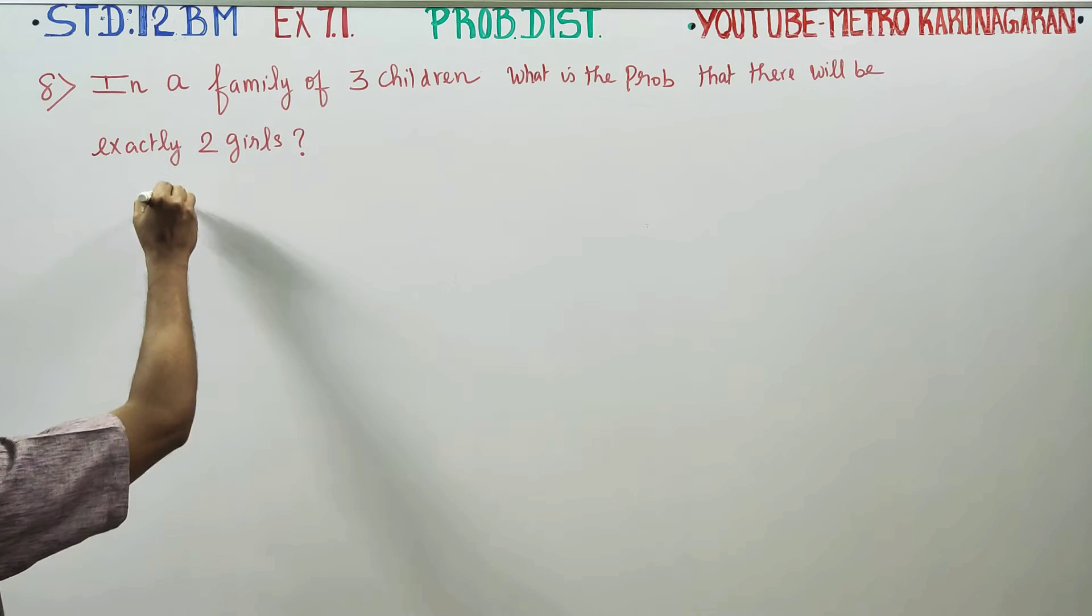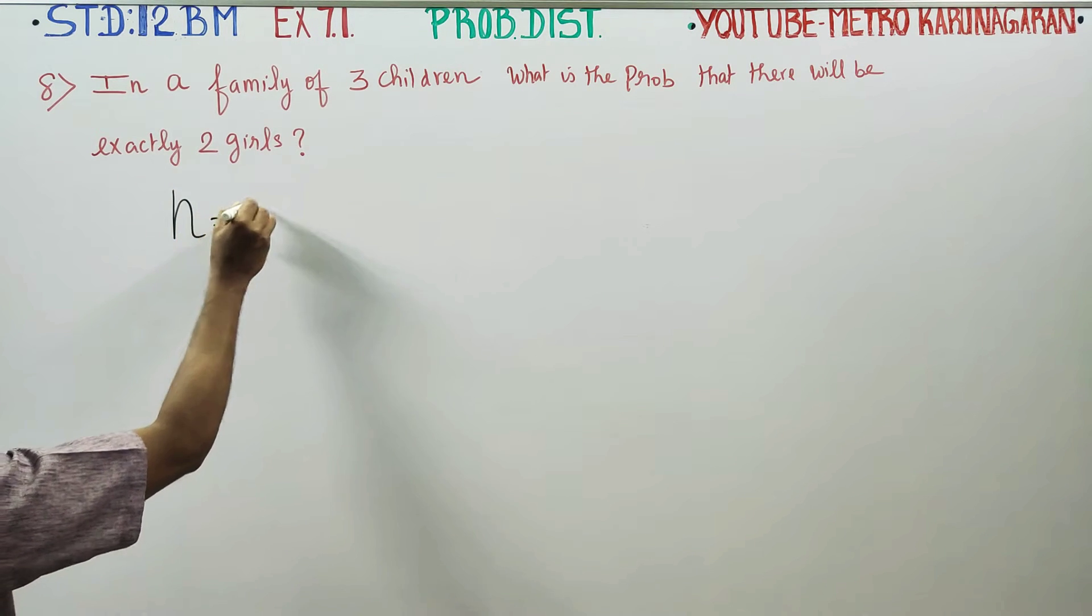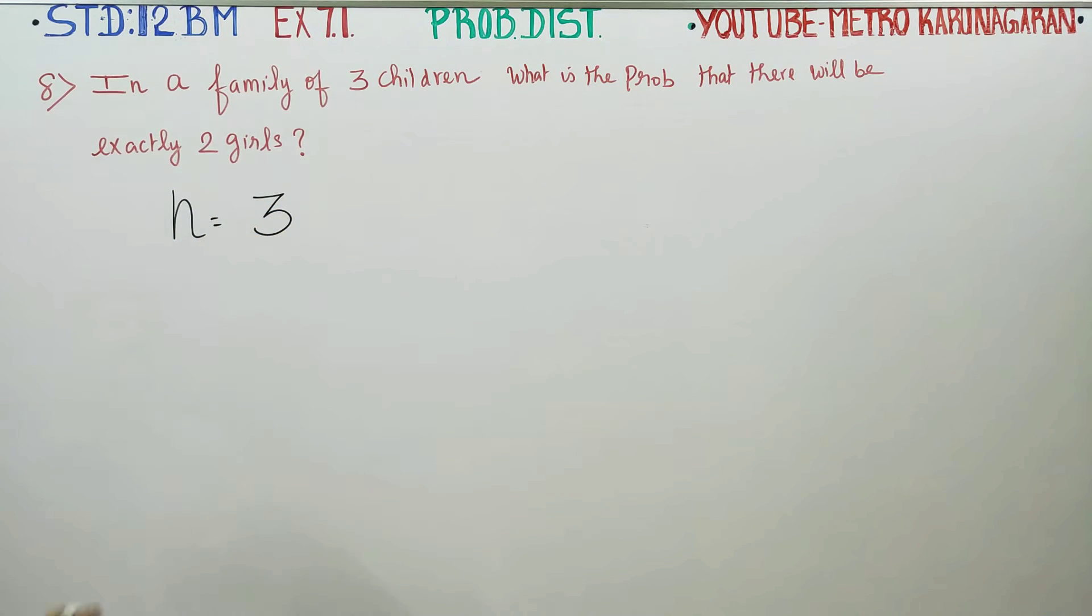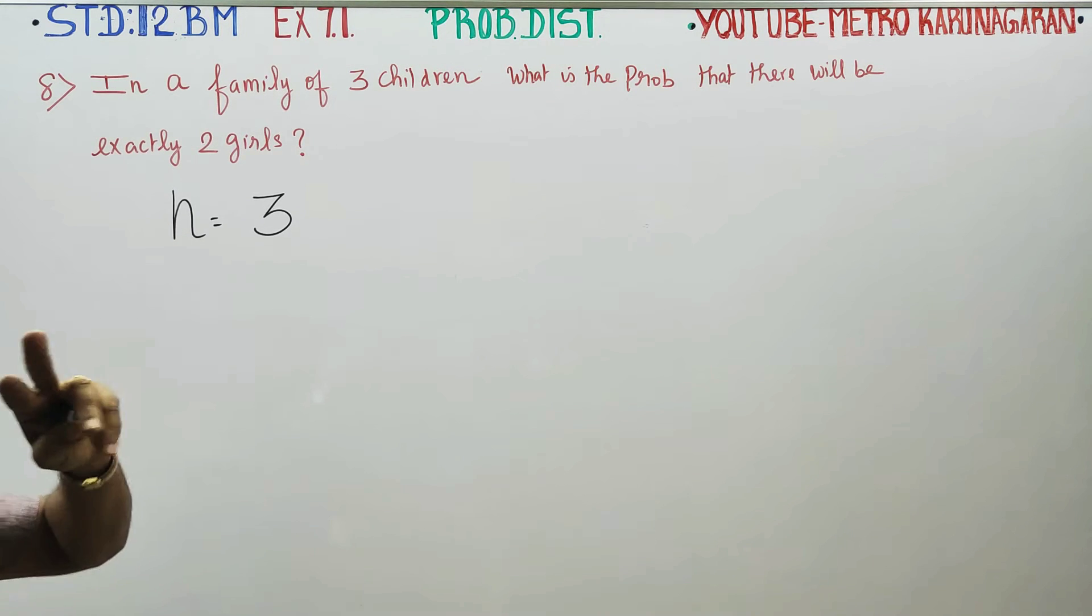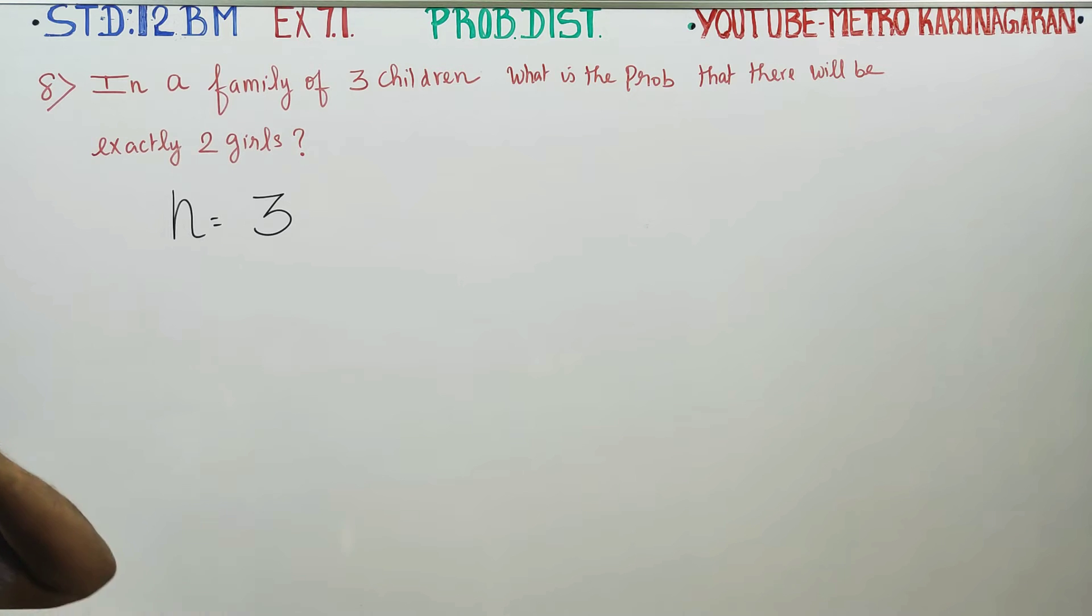In a family of 3 children, there are 3 children in the family, n is equal to 3. What is the probability that there will be exactly 2 girls? Girls are the focus of concentration.